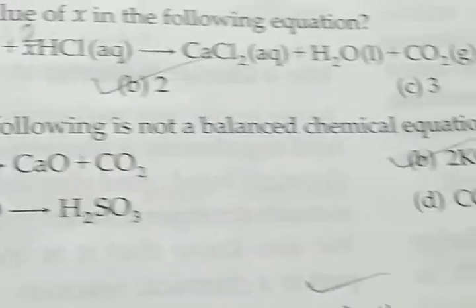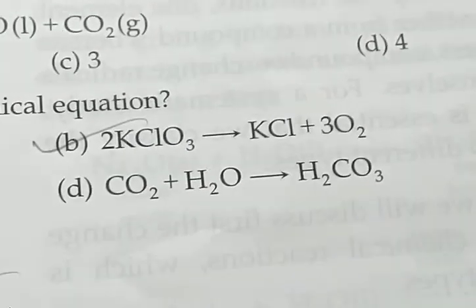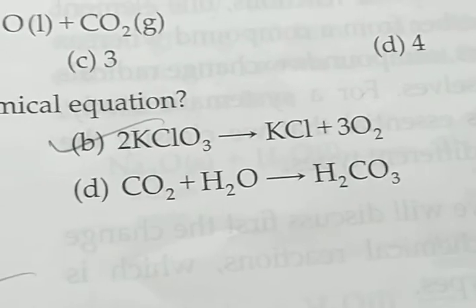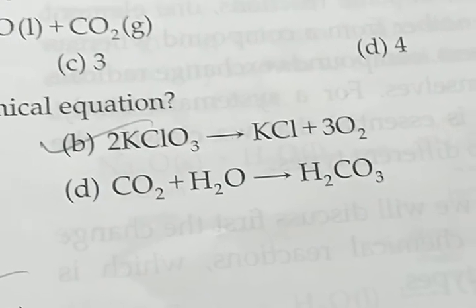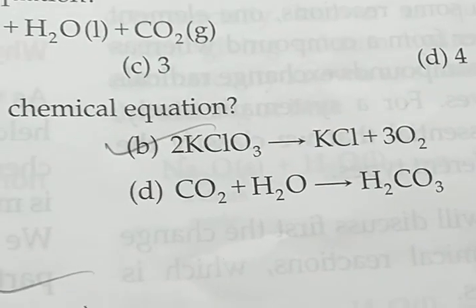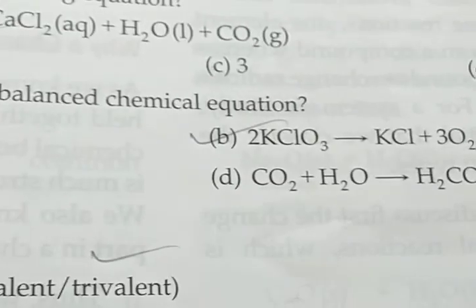Next, which of the following is not a balanced chemical equation? The answer will be B because here it's written 2KClO3. The number of atoms is 2 in the reactant side, but in the product side the number of atoms for potassium is only 1. That's why it is not a balanced equation.